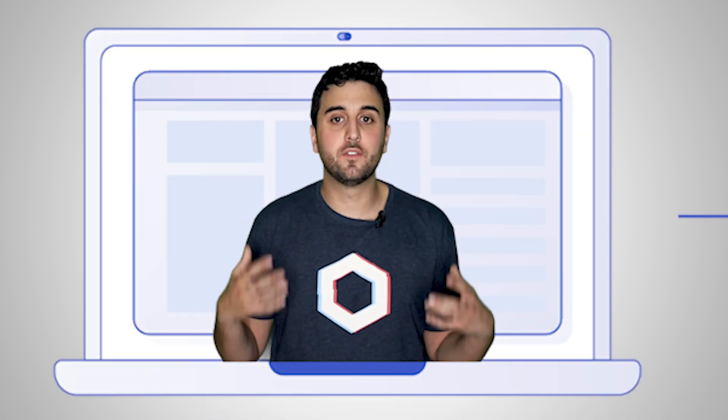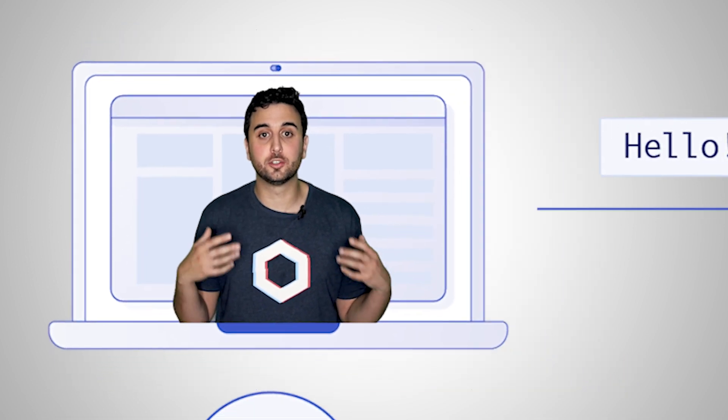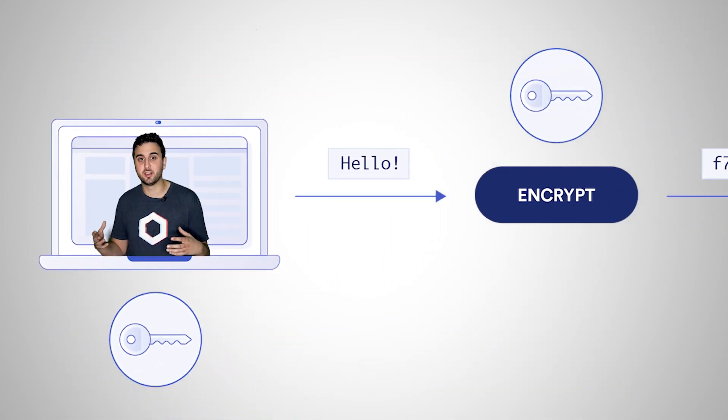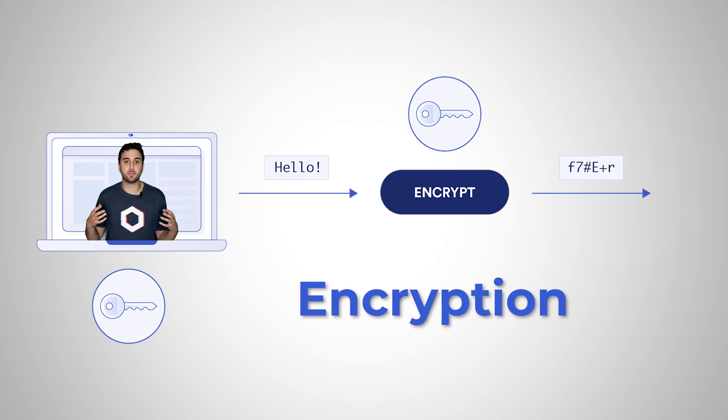I cover hashing algorithms in another video if you want a refresher. The process of converting data to an unintelligible form to stifle adversaries is called encryption.